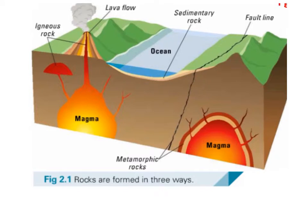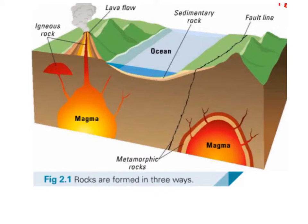Rocks are formed in three ways. Igneous rocks are formed from either magma cooling down and solidifying below the ground, or lava cooling down and solidifying above the ground. Sedimentary rocks are formed usually underneath the ocean, where other rocks, plants and animals are compressed and cemented together. Metamorphic rocks are formed by sedimentary or igneous rocks being changed due to high heat, usually from magma, or pressure from an earthquake at a fault line.